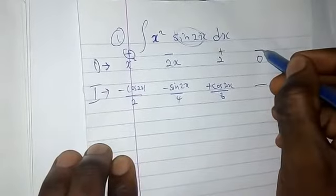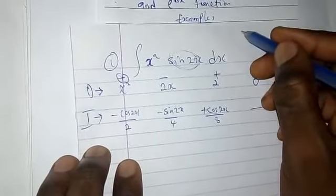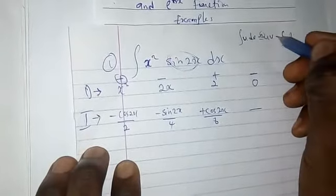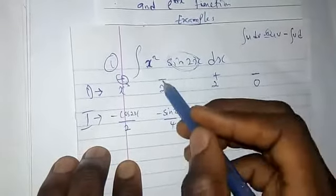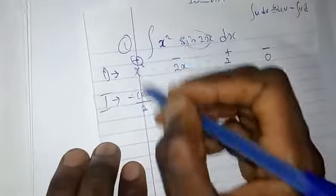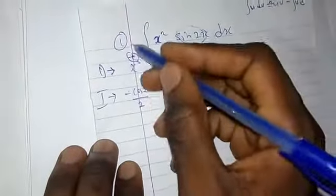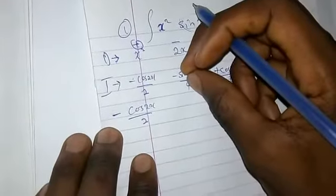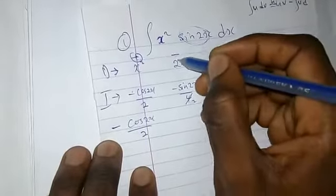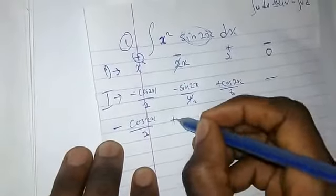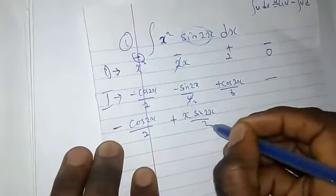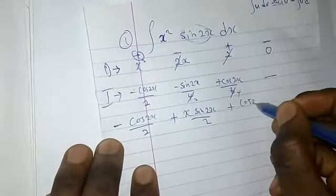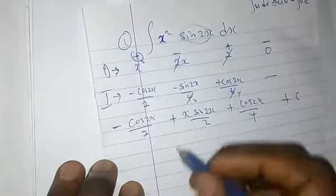Now assign alternating signs: plus, minus, plus, minus. The reason is from our integration by parts formula: ∫u dv = uv − ∫v du, giving us alternating positive and negative signs. Multiply the D and I entries diagonally with their signs: plus times −cos(2x)/2 gives −x²cos(2x)/2. The next term: the 2s cancel and negatives give positive, so +x·sin(2x)/2. Final term: factors reduce to give +cos(2x)/4, plus C. That is your answer.